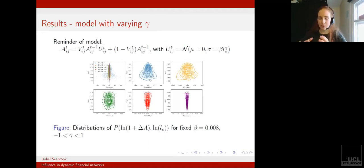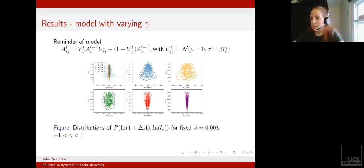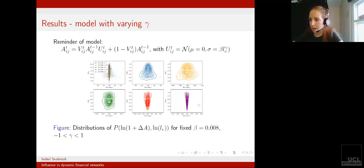For the gamma parameter, we see quite clearly that it is controlling the bias of the distribution. When gamma is negative, edges of low values of LE are more likely to show larger relative changes, whereas moving to a parameter value of positive one, edges with a high value of LE are more likely to experience larger relative changes.